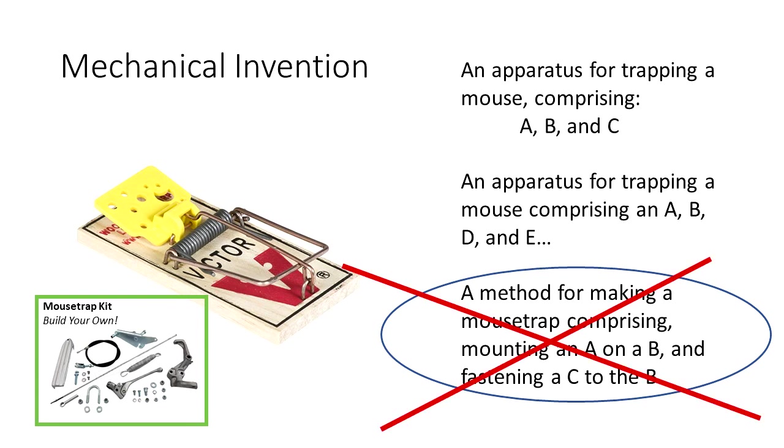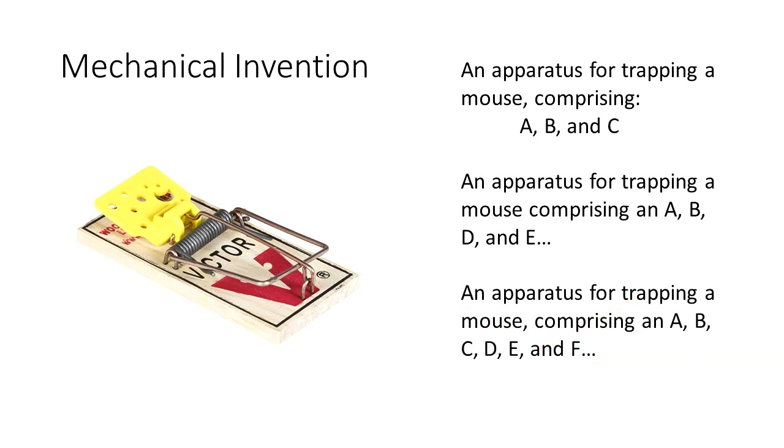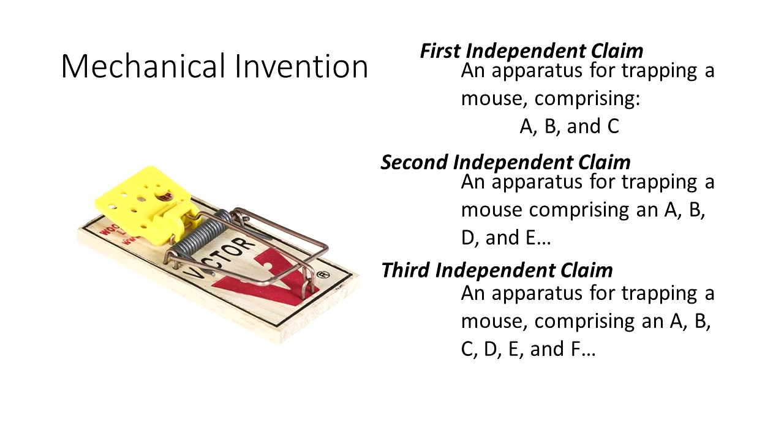And make better use of the independent claims we have at our disposal by having yet another apparatus claim. So we can add this claim instead of the method of making the mousetrap claim. So now we have the first independent claim which is pretty broad, the second independent claim which adds a few more things, and the third independent claim that adds a couple more things. And then we can add dependent claims for each of these independent claims to make a full complete claim set.